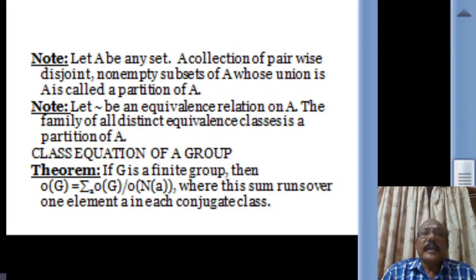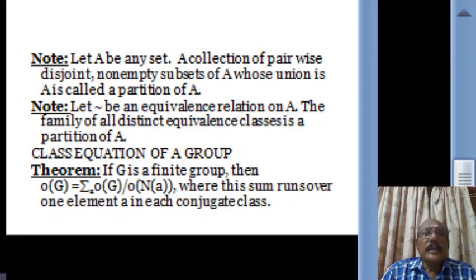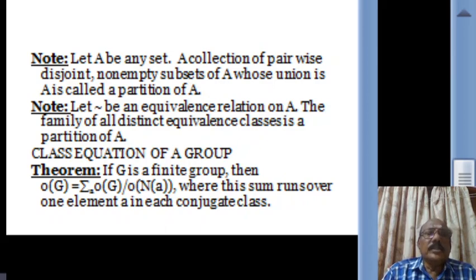A collection of pairwise disjoint non-empty subsets of G whose union is G is called a partition of G. Since the conjugacy relation delta is an equivalence relation, the equivalence classes form a partition of G. These equivalence classes are useful in deriving the class equation of the group. To count the number of elements in G, it is enough to count the number of elements in each conjugate class. Adding them gives: order of G equals the sum over one representative A from each conjugate class of the order of G divided by the order of N(A).